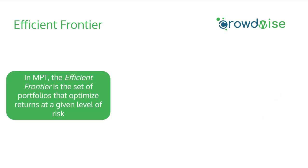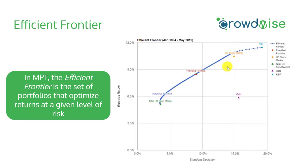In Modern Portfolio Theory, the efficient frontier is the set of portfolios that optimize returns at a given level of risk. Let's go back to our example, but add a couple more assets — REITs (real estate investment trusts) and gold, as well as our total U.S. bond market and U.S. stock market. Now you can see that the efficient frontier depicted by the blue line has actually shifted. No longer does it go through the U.S. stock market directly, since adding a small portion of REIT and gold can shift the curve to give you more efficient portfolio allocations. Instead of holding 100% U.S. stocks, you could actually get a higher return for the same risk by adding some REITs. Similarly, you can get similar returns for a lower level of risk by mixing in these assets. This is the power of Modern Portfolio Theory and how asset allocation becomes important for your overall investments.